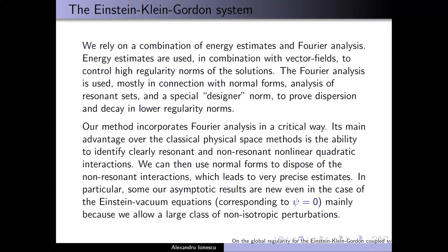About half of the proof is done in the Fourier space and half in the physical space. We have a combination — the real combination of energy estimates for the higher order part of the solution, of course, energy estimates. At the low order, we are using what we call a Z-norm. This is not an L2-based norm — it's a separate norm — and that's what we use to prove dispersion and decay.